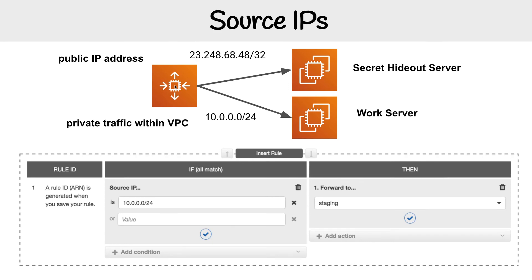If we have our own home address, we want to go to the secret hideout server, because it's a much cooler server to access. And everyone within the VPC, it's for boring work, and we want them to go to the work server. So we set the CIDR block range here and it's going to go to our staging target group, which is the work server. And if we wanted to do it for the home address, we'd do the same process and set the target group to the secret hideout server.